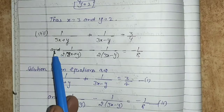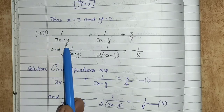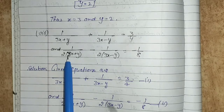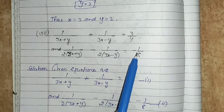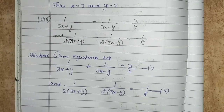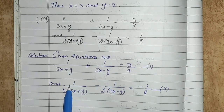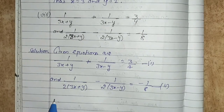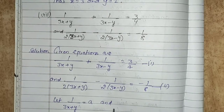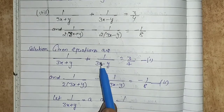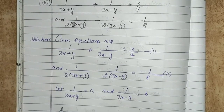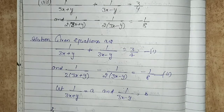The next part is part number 8. The given equations are 1 upon 3x plus y plus 1 upon 3x minus y equals to 3.4 and 1 upon 2 into 3x plus y minus 1 upon 2 into 3x minus y equals to minus 1 upon 8. Assume 1 upon 3x plus y equals to a and 1 upon 3x minus y equals to b.